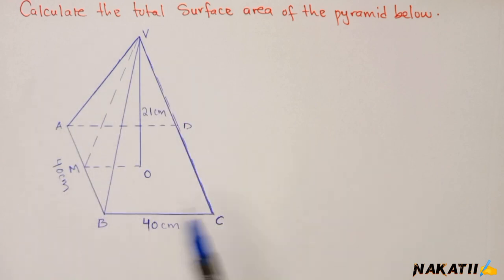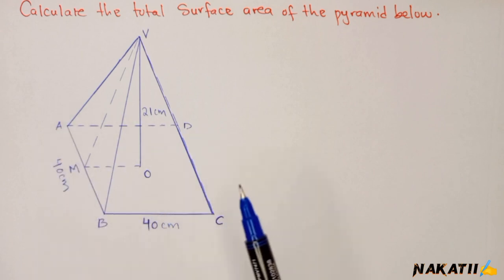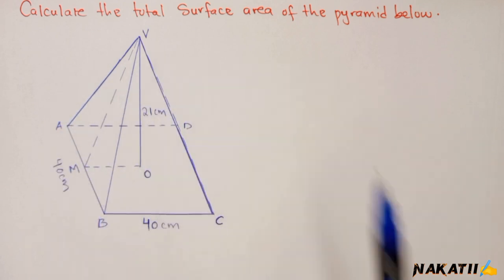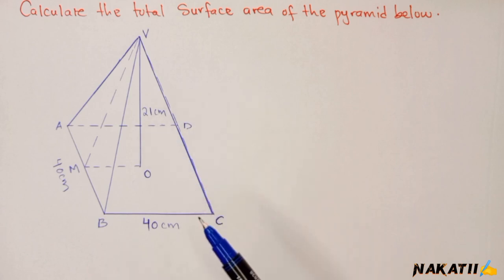So the surface area of this pyramid is simply the area of this square base plus the total area of triangular faces, which are four. We need to find the area of one triangular face and multiply by four because they are equal.